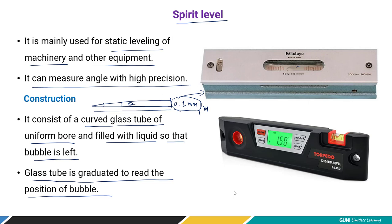The spirit level is basically used to level out machinery in industries. It is an angular measuring device. It consists of a small glass tube filled with liquid, and deliberately a bubble is left out, so the movement of the bubble with respect to given graduations is used to measure angles.